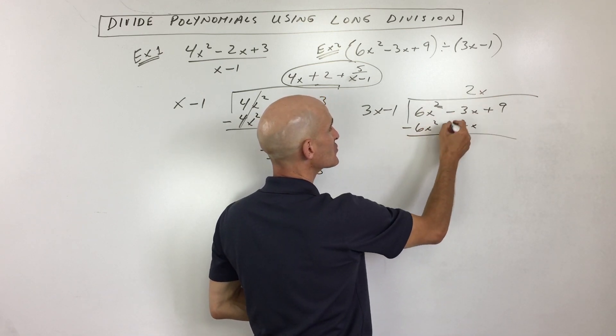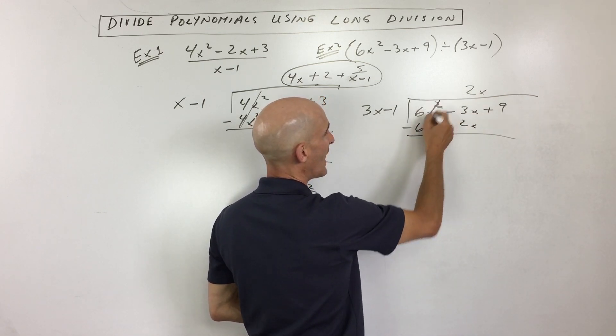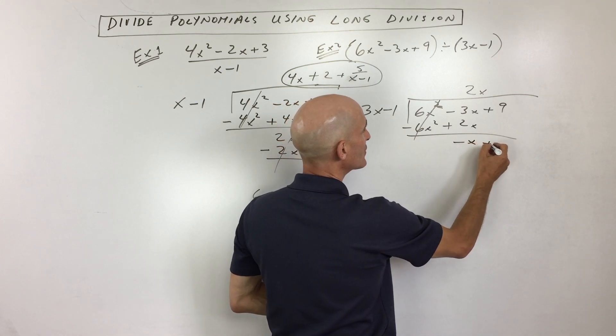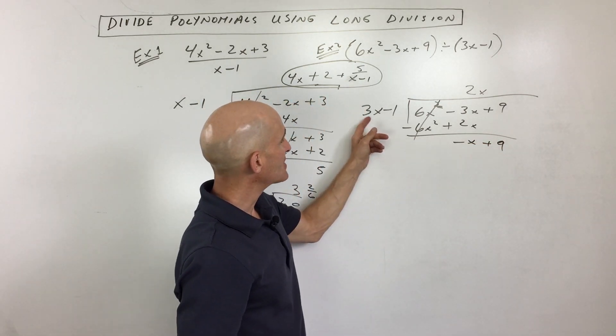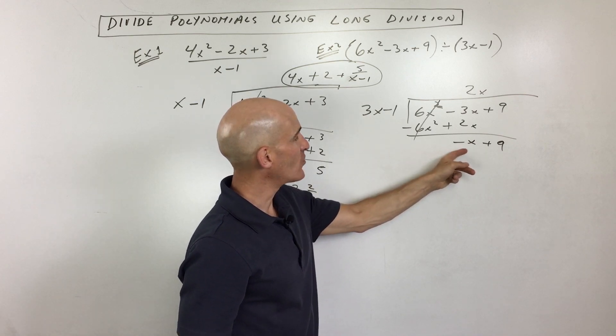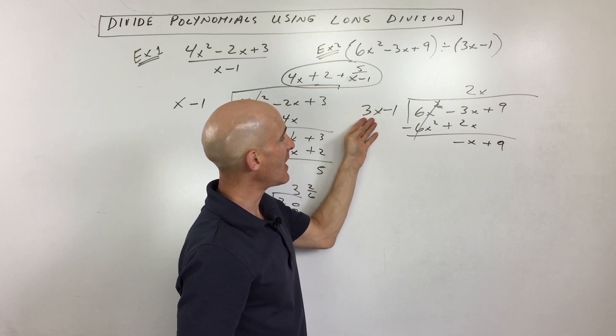And then you can subtract, but it's easier to change the signs to the opposite and just add. Same thing. We're not doing anything different. We're just subtraction is adding the opposite. Now we say, how many times is 3x going to negative x? Or you could say what's negative x divided by 3x?